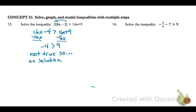If we had gotten a statement that was true, like negative 4 is less than 9, then we would have infinitely many solutions. That means any number that you put in will make that inequality true.